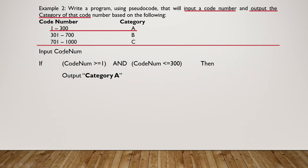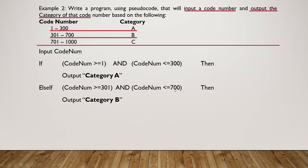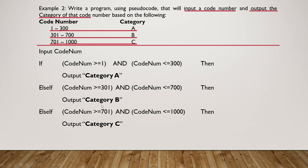Any one of those two conditions being false moves to the next part of the program, which checks whether the code number falls between 301 and 700 — if so, output 'category B.' Lastly, else if code_number >= 701 AND code_number <= 1000, output 'category C.' The program does not handle any code number less than 1 or greater than 1000, so we stop the program here.